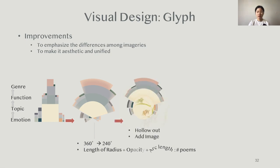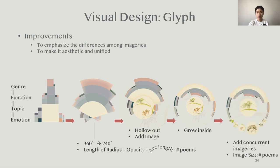Next, we hollow out an inner circle to embed the image. We then distribute the sectors inside the circle so that we can make all the imaginary glyphs the same size, which is neater. Finally, to show the relation of each imaginary with others, we use the left one-third arc to add other imaginaries that appear concurrently in the same poems. The size of the image encodes the number of poems that appear together.